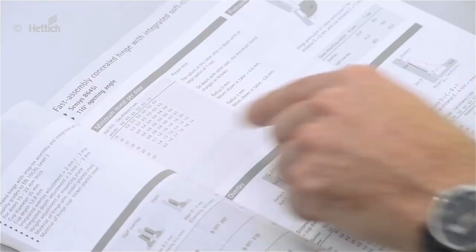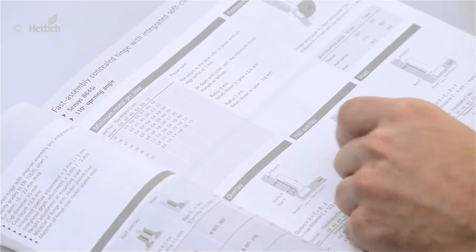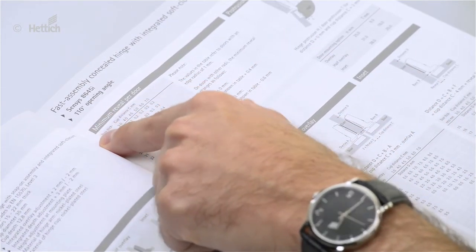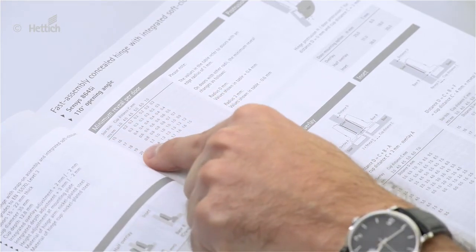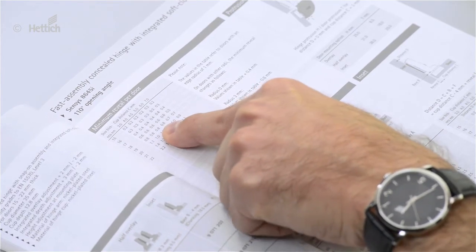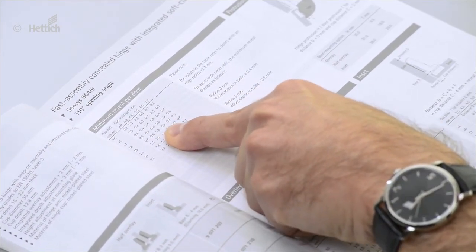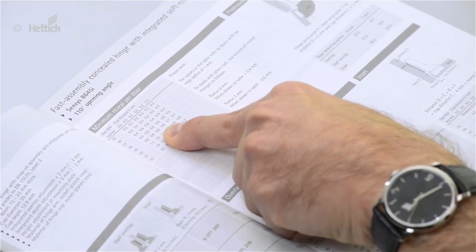Therefore we go back to the catalog. There's a little table that shows the minimum reveals. The door thickness in the example was given as 19 millimeters and the cup distance C is 4.5 millimeters. So that's a minimum reveal of 0.8 millimeters.